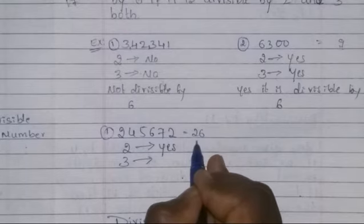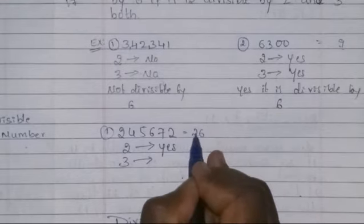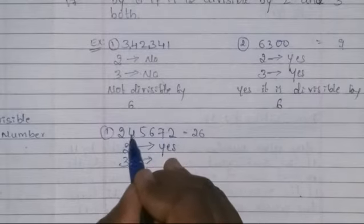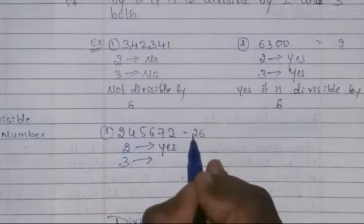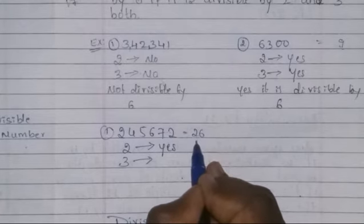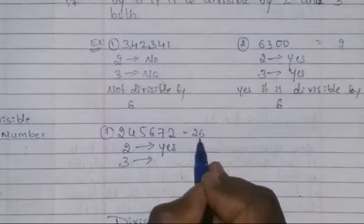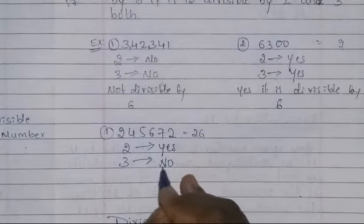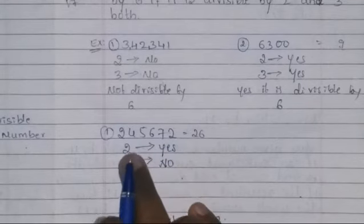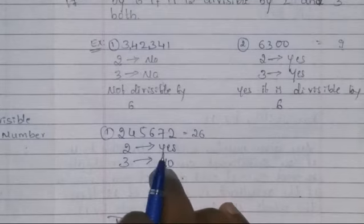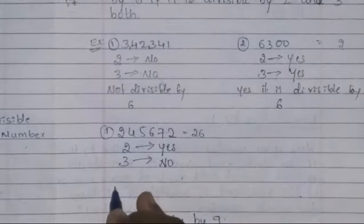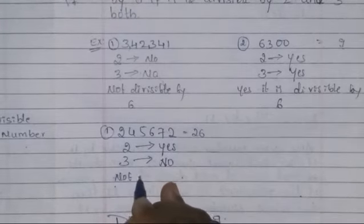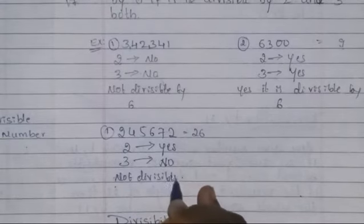Now we check whether twenty-six is a multiple of three or not. Twenty-six is not a multiple of three, so I write no — it is not divisible by three. See here: this number 245,672 is divisible by two, but it is not divisible by three. The condition requires both tests to pass. Since divisibility by three fails, the whole number is not divisible by six.